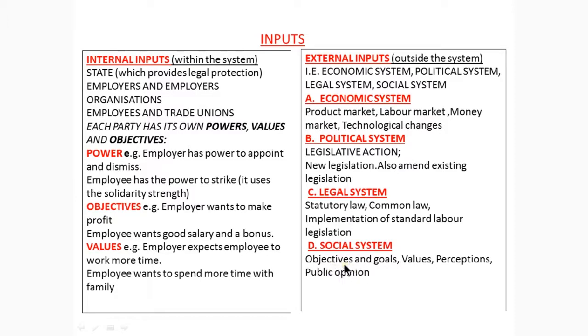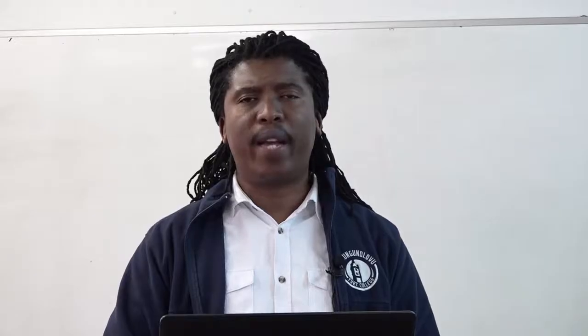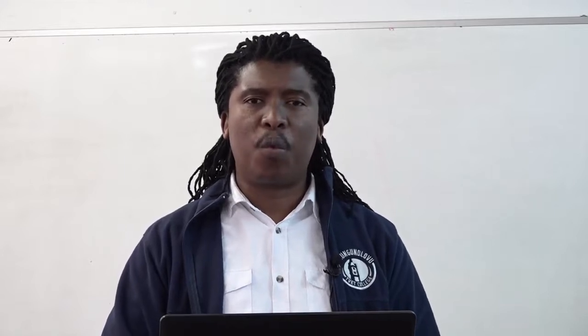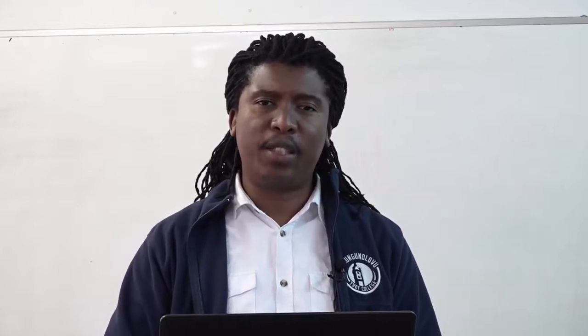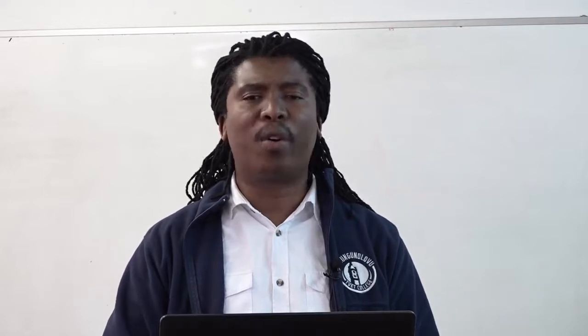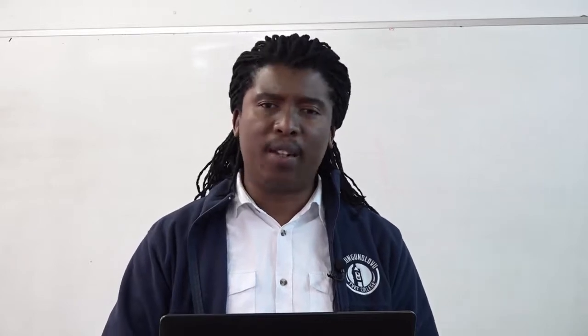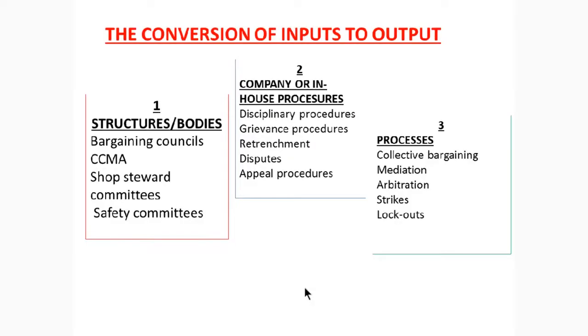The fourth one is the social system. Under the social system, we look at the objectives and goals, the values of the population, the perceptions, and public opinion. For example, if we say a firm is situated in a colored community, surely the expectation will be that the employer should employ more colored people than other race groups. This affects the internal component while coming from the outside environment — it is called the social system.